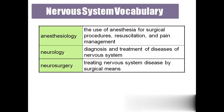Coming to the vocabulary related to the nervous system: 'Anesthesiology' is the use of anesthesia for surgical procedures, resuscitation, and pain management. 'Neurology' is the diagnosis and treatment of diseases particularly related to the nervous system. 'Neurosurgery' means treating the nervous system by surgery.